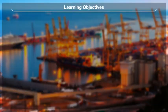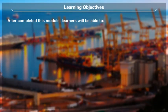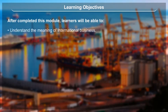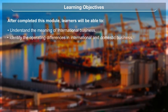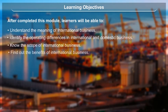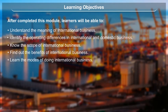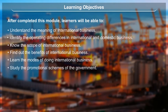Learning Objectives: After completing these modules, learners will be able to understand the meaning of international business, identify the operating differences in international and domestic business, know the scope of international business, find out the benefits of international business, learn the modes of doing international business, and study the promotional schemes of the government.